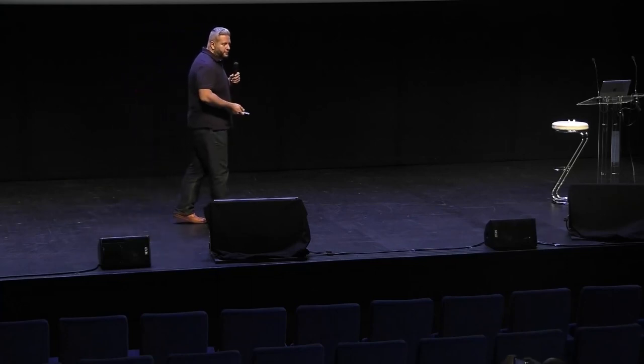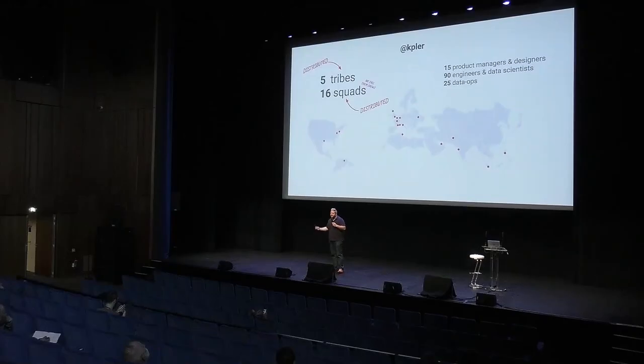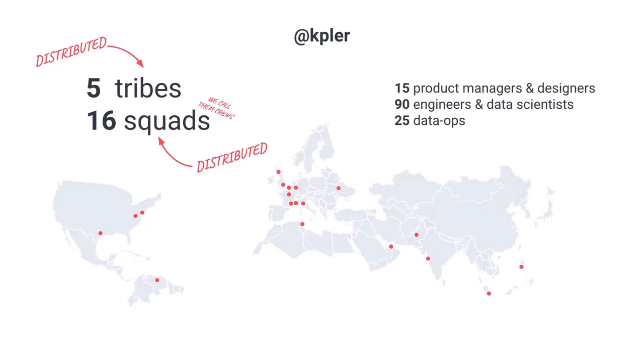As you can see on the map, we have a lot of people in Europe — in France in multiple locations, the UK, Belgium, Italy, Ukraine, Poland — and people in the US, South America, Middle East, India, Singapore, quite a lot in Singapore actually, and in Asia in general.